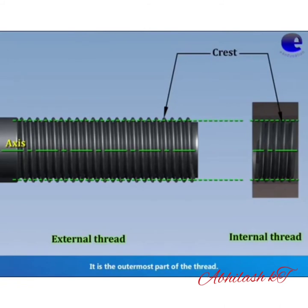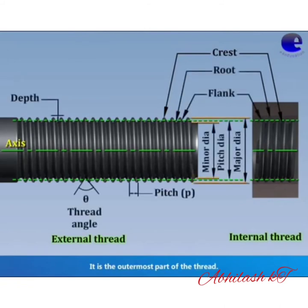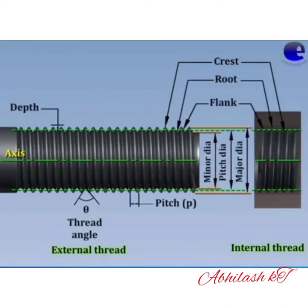The terms in the screw thread nomenclature are: axis, major diameter, minor diameter, pitch diameter, pitch, thread angle, depth, flank, and root.